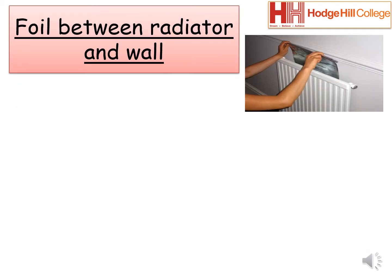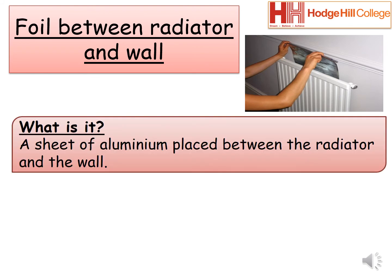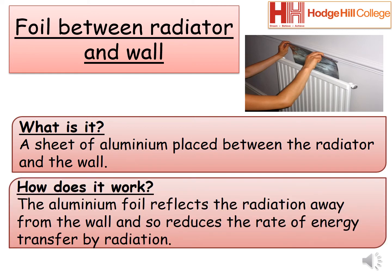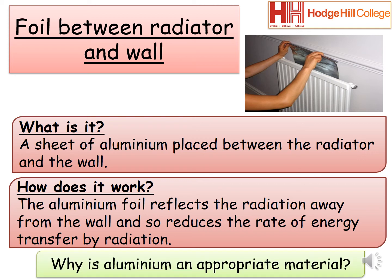A very easy method of cutting down heat loss is to use a foil material between a radiator and a wall. This works because placing a thin sheet of aluminium between the wall and the radiator will cut down the amount of energy lost to the wall through radiation. The aluminium foil reflects the radiation away from the wall back into the room, making it more efficient to heat the room. Aluminium is a good material because it is shiny and easy to shape.